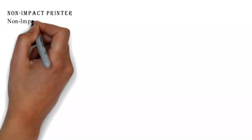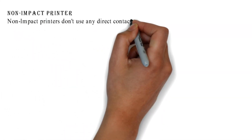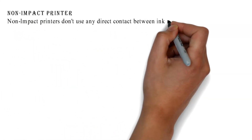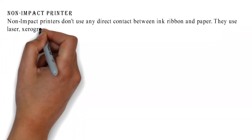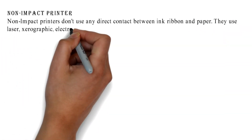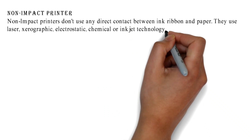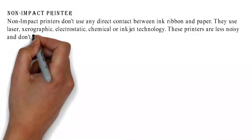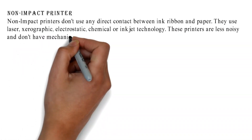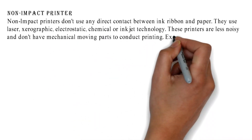Non-impact printers don't use any direct contact between ink ribbon and paper. They use laser, xerographic, electrostatic, chemical, or inkjet technology. These printers are less noisy and don't have mechanical moving parts to conduct printing.